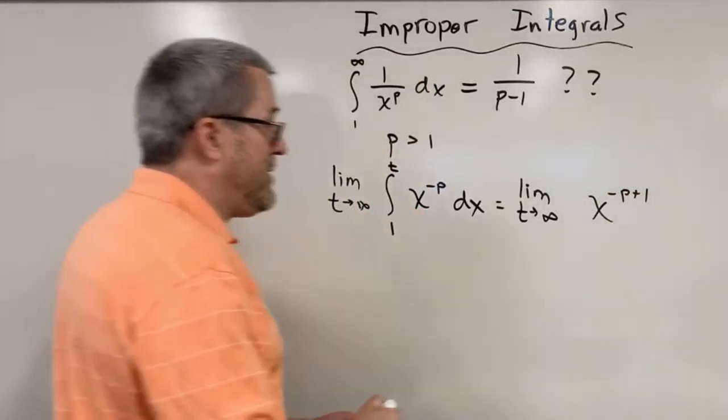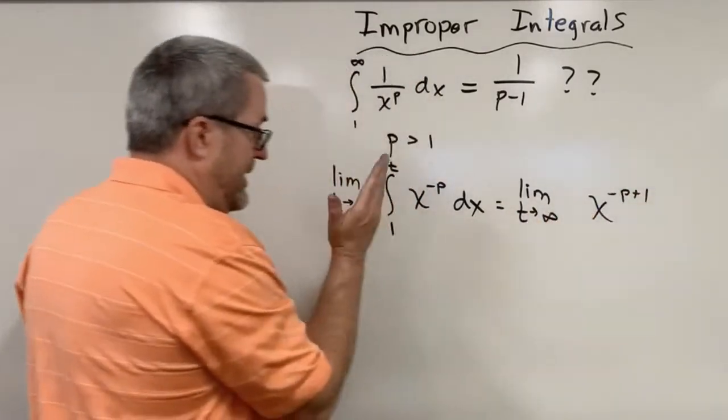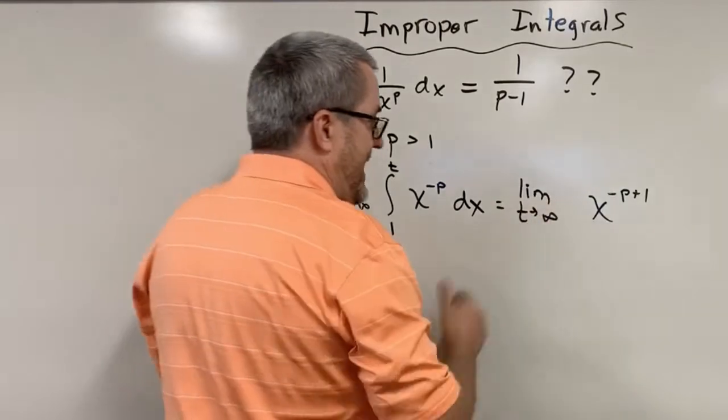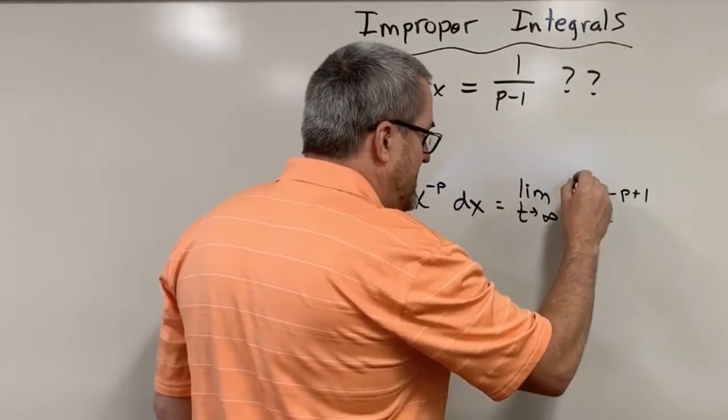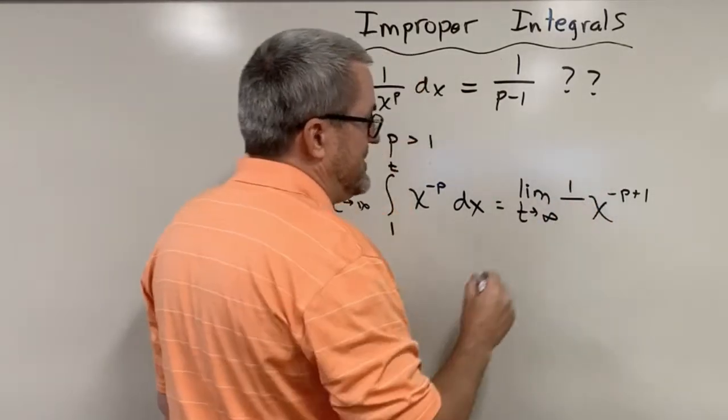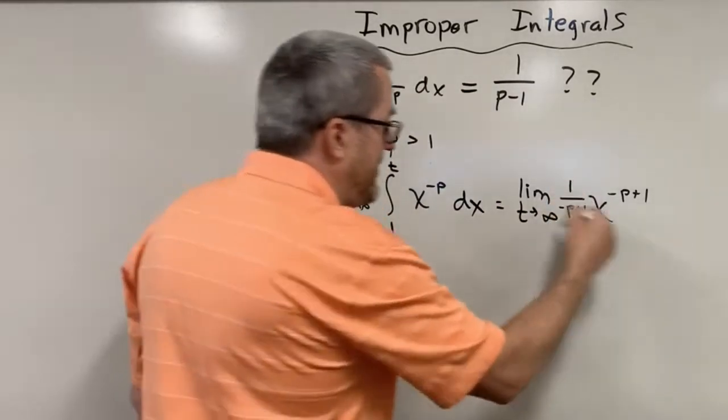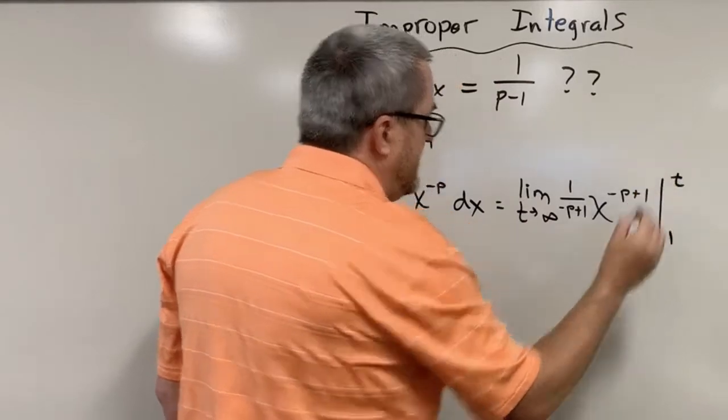Now, when you take the derivative, that exponent comes out front, but notice it did not survive that differentiation process. So we had to do something here, have a factor to eliminate that. And it was one over negative p plus one. And then we evaluate that from one to t.